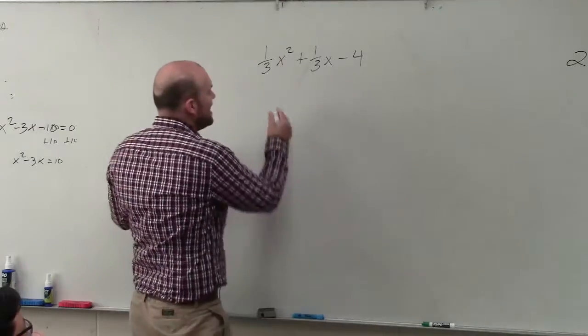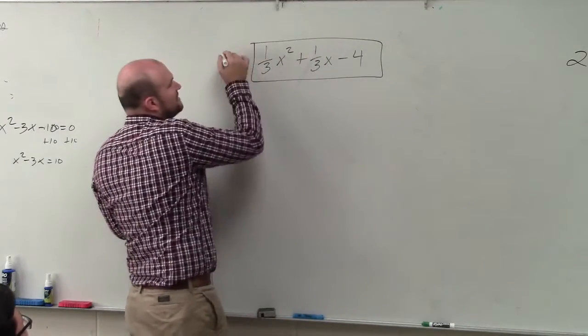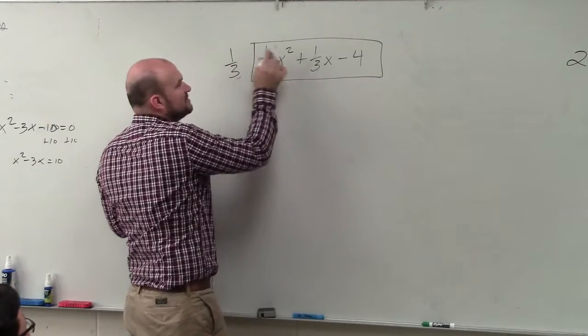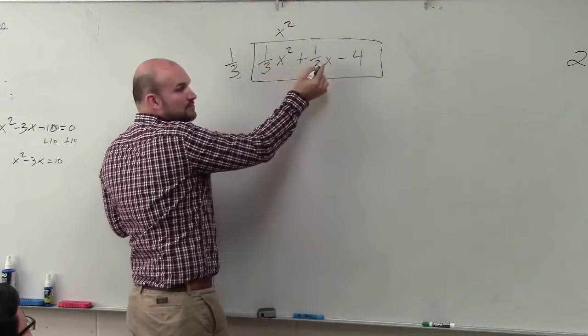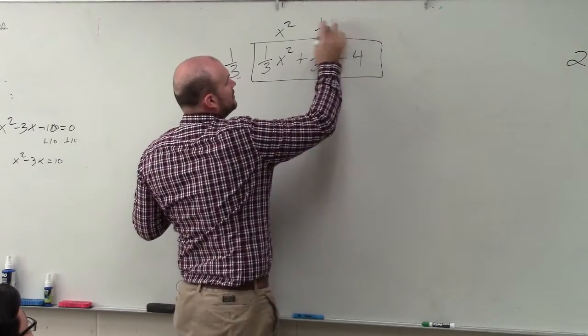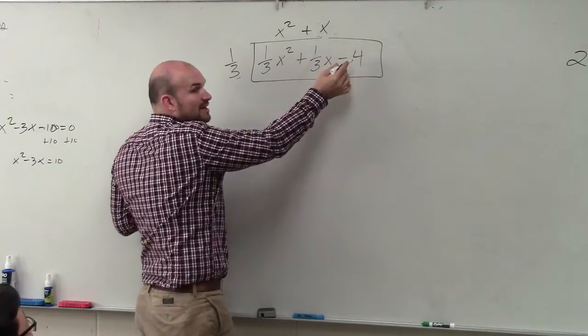When we're finding the box, we're basically saying, if I say, alright, this has to be 1/3, I'm saying 1/3 times what gives me 1/3 x squared? Oh, x squared. 1/3 times what gives me 1/3 x? Just x. Then 1/3 times what gives me negative 4?